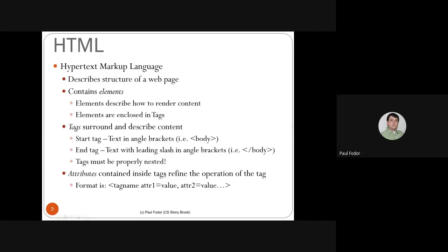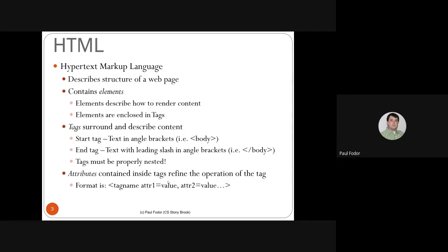There are tags which surround an element and there are attributes of those elements, contained within tags to refine the operation of the tag. A tag with attributes looks like a tag name after the angle bracket, then attribute equals value pairs. The value, if it has multiple values, they are separated by spaces. We'll see today that there are attributes like background where you enumerate multiple values such as background color, text color, image, and position.